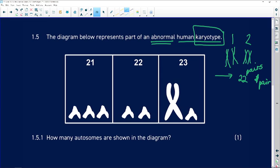This diagram represents part of an abnormal human karyotype. We're only looking at chromosomes 21, 22, and 23.